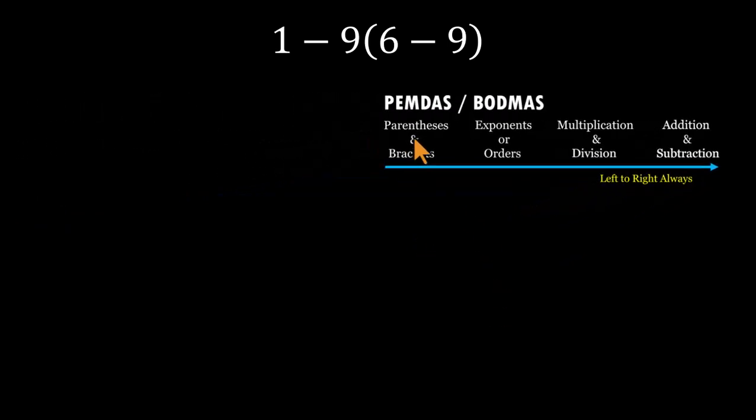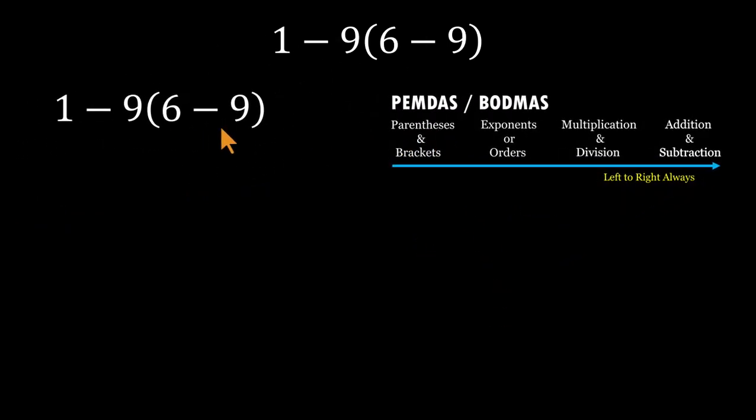So first up, parentheses, six minus nine equals negative three. Now the expression becomes one minus nine times negative three.